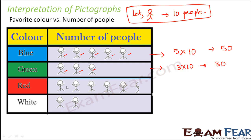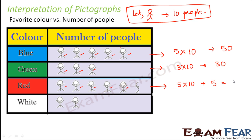What about red? Here you have 1, 2, 3, 4, 5 — and the last one is not full, it is only half of the picture. So 5 full symbols is 5 into 10, plus the half symbol means not 10 people but half of 10, which is 5 people. So this would be 50 plus 5, that is 55. So 55 people say that red is their favorite color.